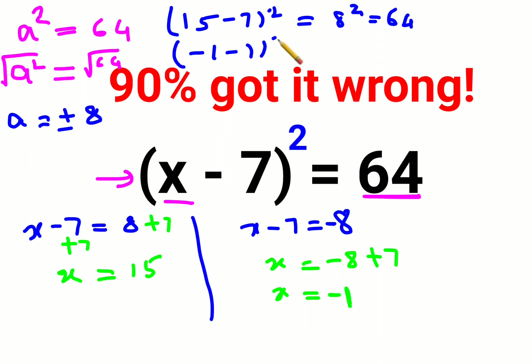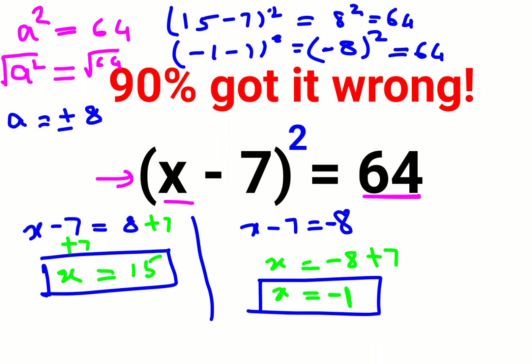That is basically (-8)². Now square of a negative number will always get you a positive result which is +64. So I can say the answer is either x = 15 or x = -1. That's it for today, I will see you in the next video.